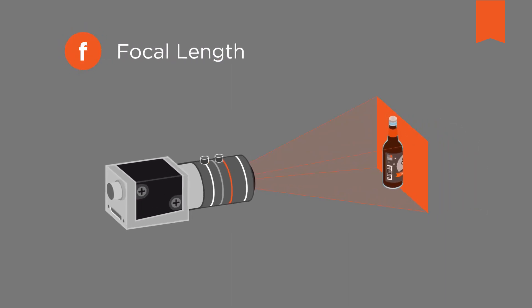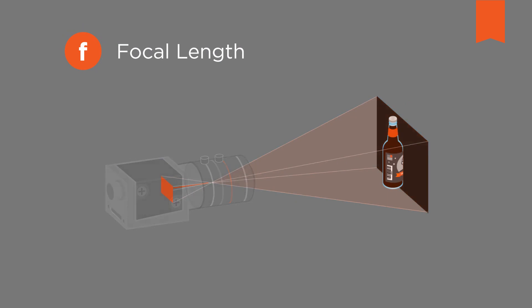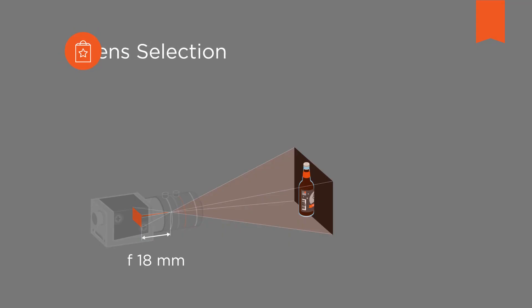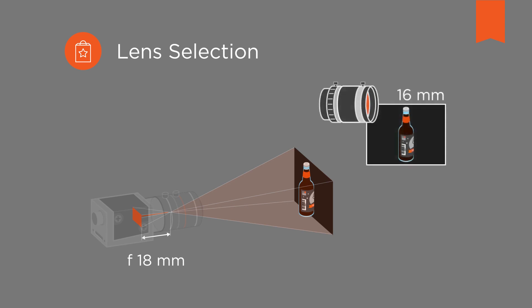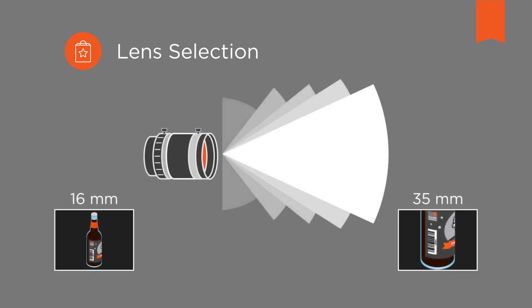The field of view, the working distance and the sensor size yield the focal length F of the lens to be selected, given in millimeter. For industrial cameras, fixed focal length lenses are preferred, as they are mechanically more stable. If the calculated value for the focal length doesn't match any available lens, it is recommended to choose the next smaller focal length. As a side effect, this results in a slightly larger field of view.